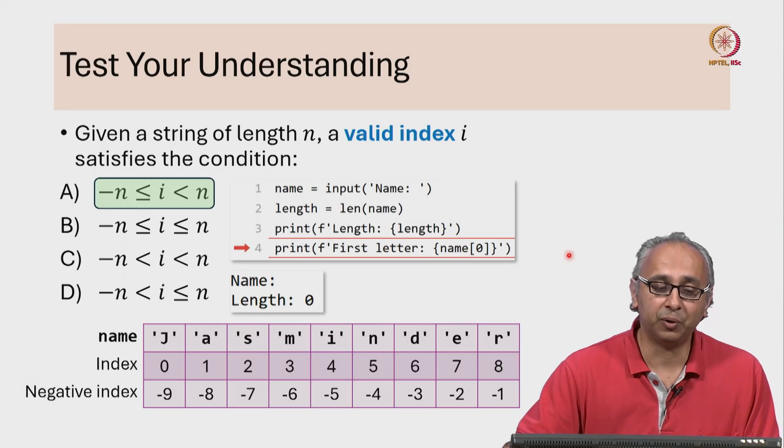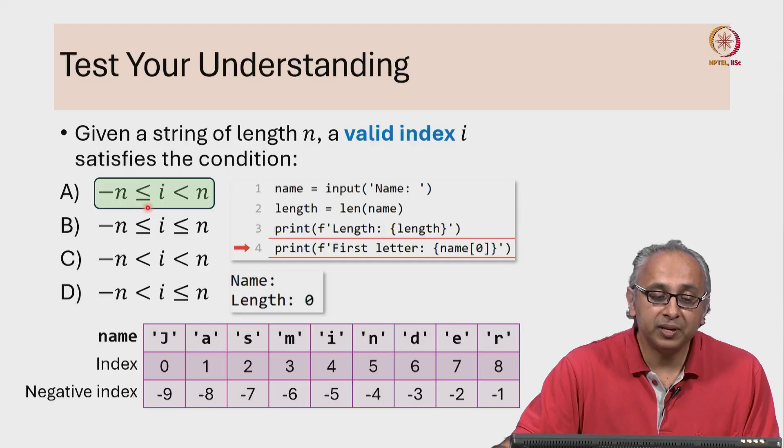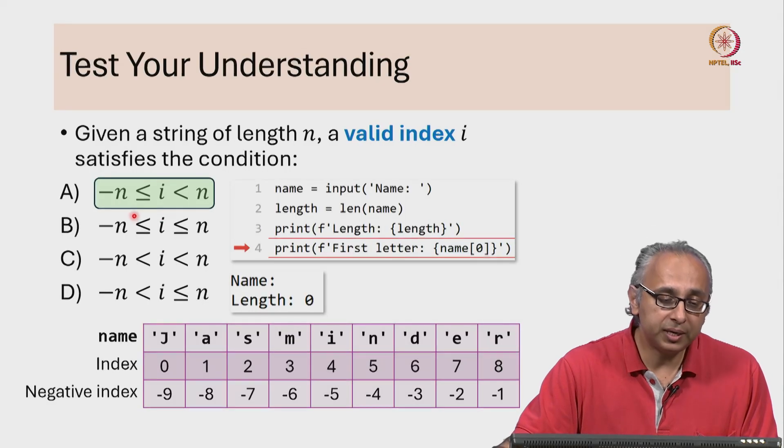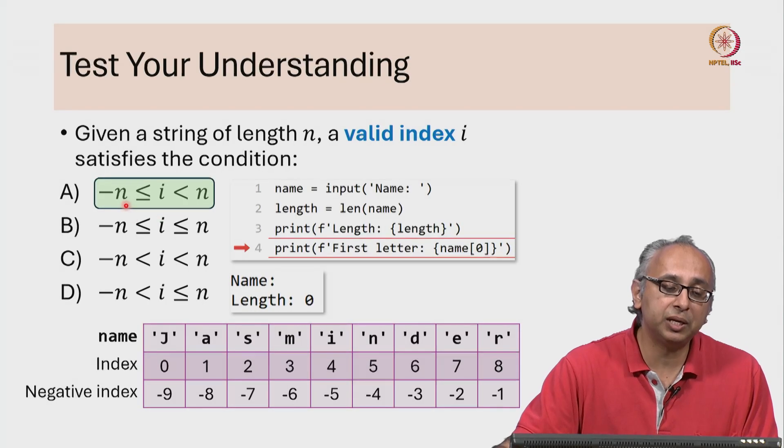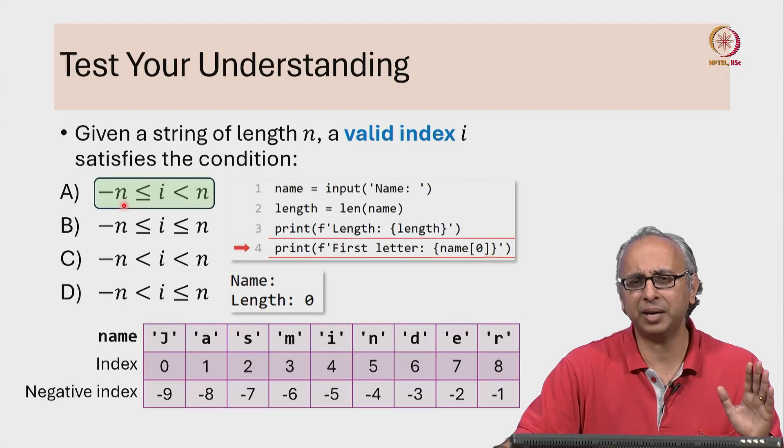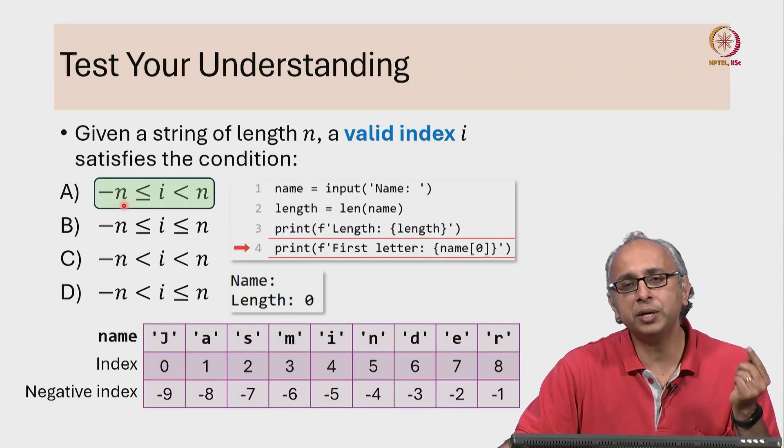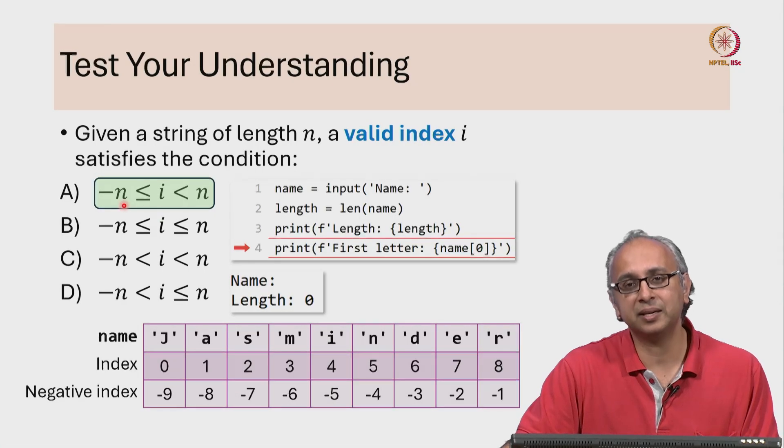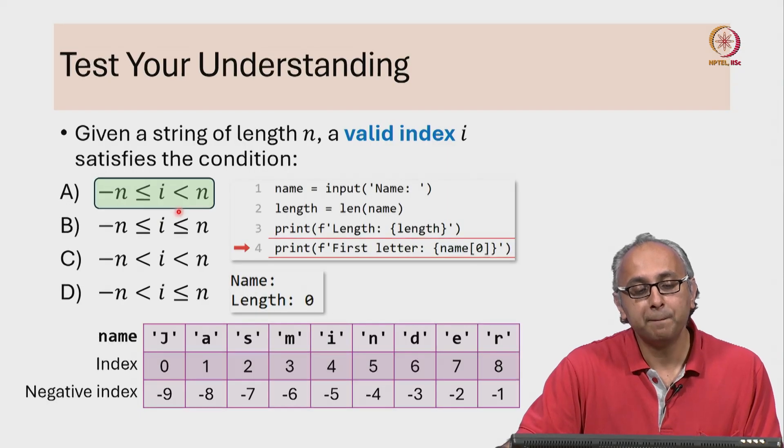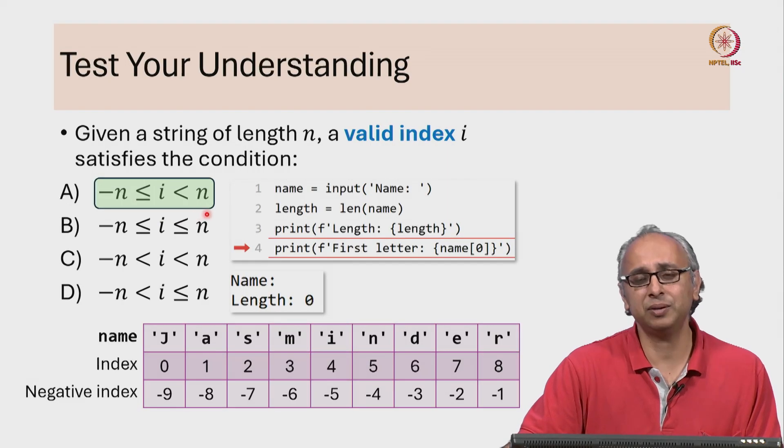When n is 0, what indices i are in this range? What indices are greater than or equal to minus 0? Well, minus 0 is just 0. So, what indices are greater than or equal to 0 but strictly less than 0?